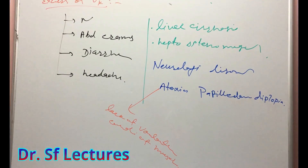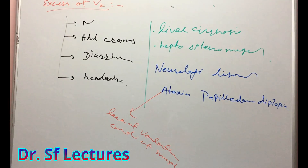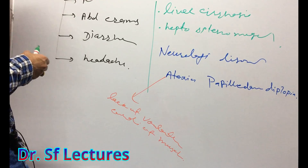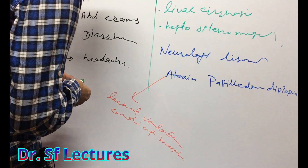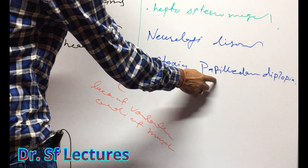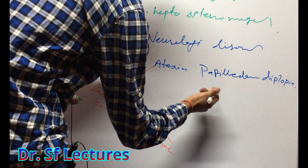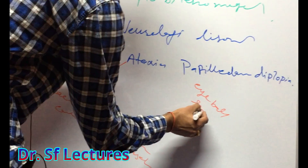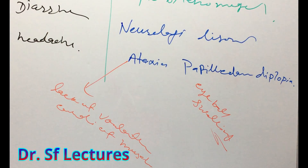Papilledema is a very important neurological disorder. When we take Vitamin K in excess, the pressure in the CNS will be increased and the optic nerve will be disturbed. The eyeball will be swollen. So in papilledema, the eyeball will swell.